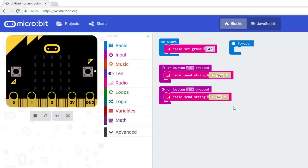This will allow us to press the A button on our microbit and transmit the word Yes to our partner's microbit. Likewise, by pressing B, we can send the word No. Now, we need a way to receive and display messages.